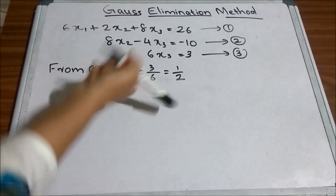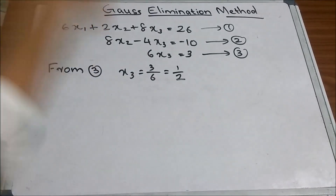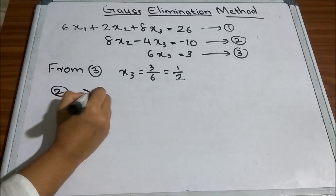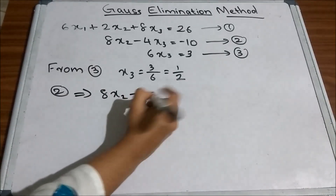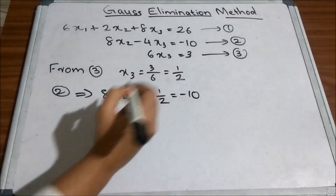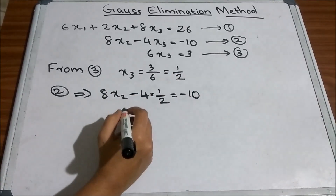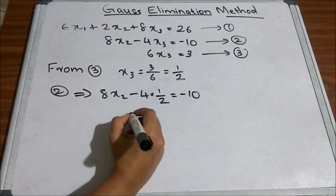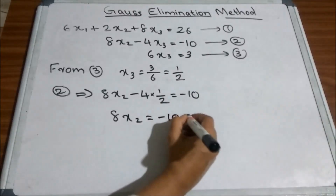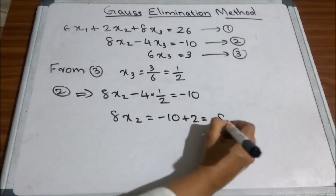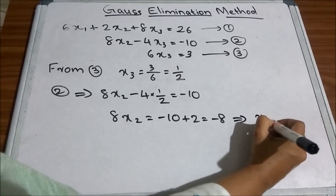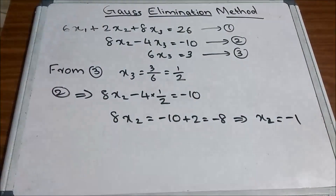We substitute x3 = 1/2 into equation 2: 8·x2 − 4·(1/2) = −10, which gives 8·x2 − 2 = −10, so 8·x2 = −8, and therefore x2 = −1.